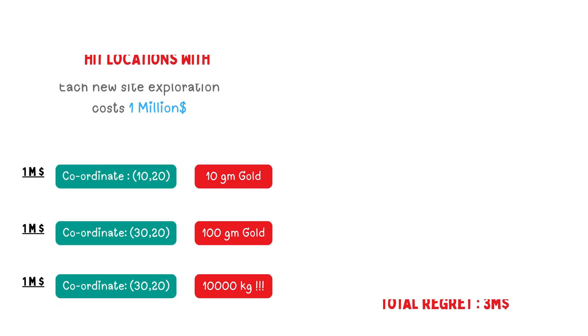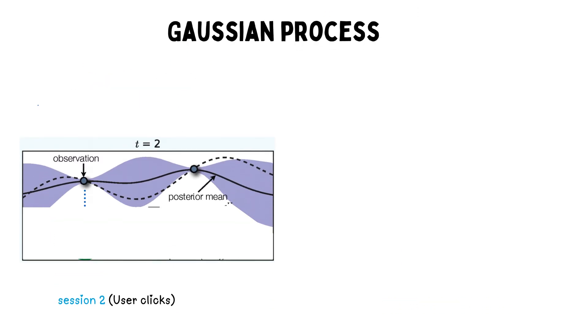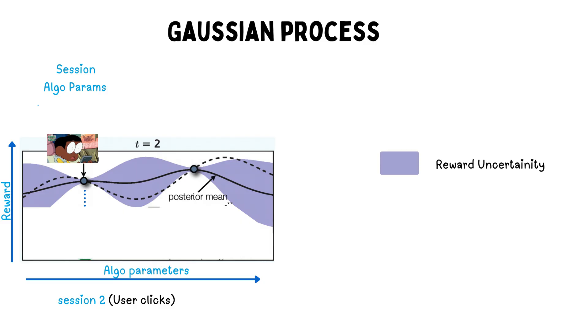Now, each observation is a new session a user had, where the x-axis is the algorithm parameters and the y-axis could be the number of clicks or the reward that you would roughly model. It could be the number of clicks or it could be a boolean, depends on how the platform is modeling it. The purple region represents the mean.